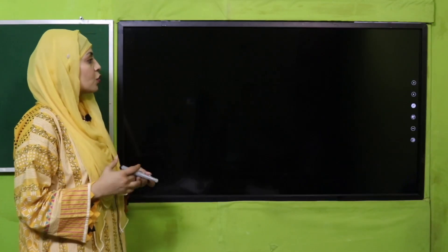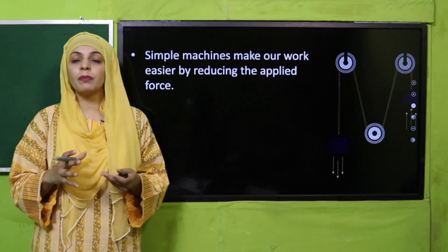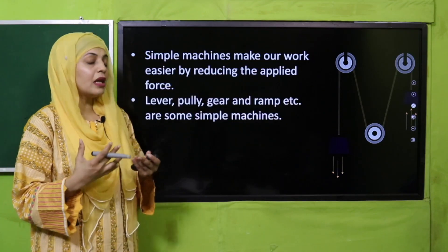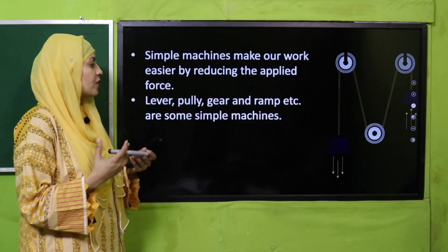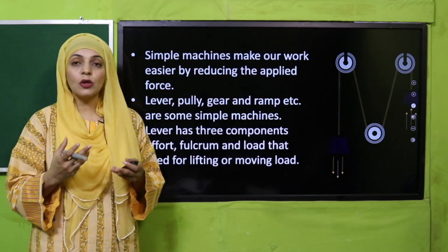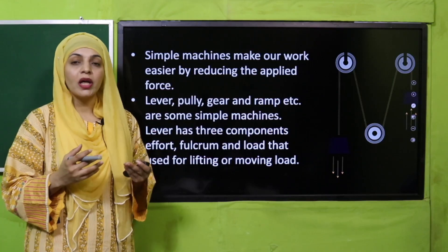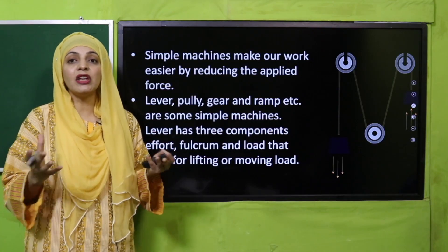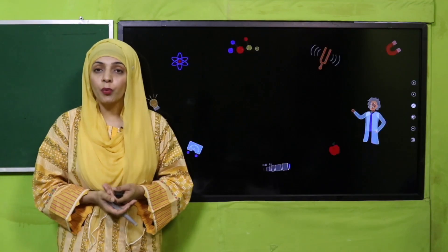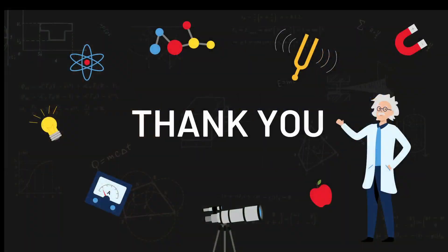Now let's revise the key points — the wrap-up of the lesson. Today we discussed the lever. Simple machines make our work easier. Lever, pulley, gear, and ramps are all examples of simple machines. A lever has three components: effort, fulcrum, and load. A lever helps us lift heavy loads. I hope you have enjoyed today's lecture. Keep everybody around you safe. Have a good day, thank you so much, and Allah Hafiz.